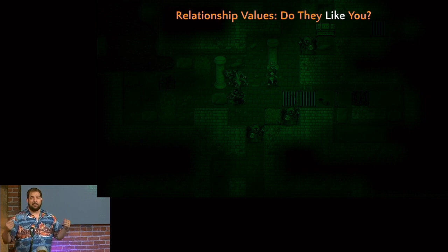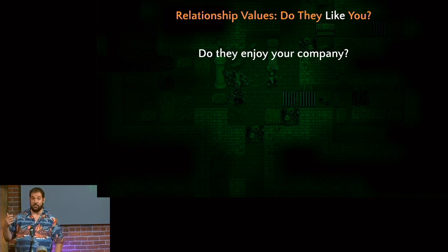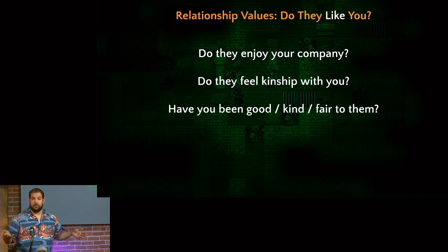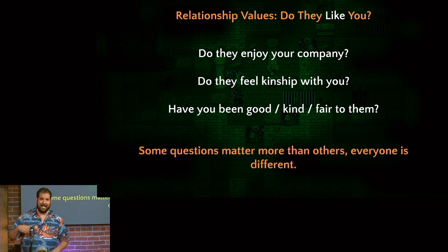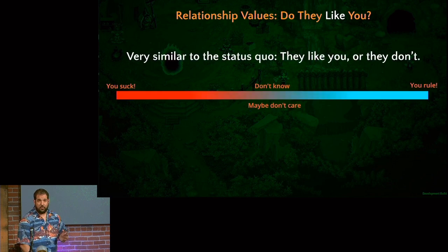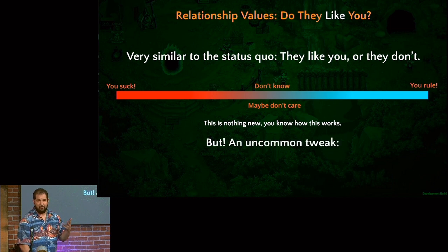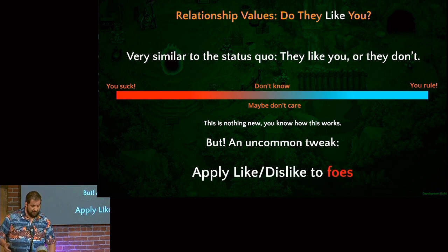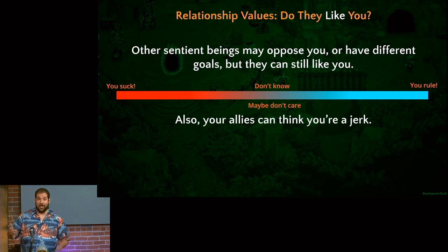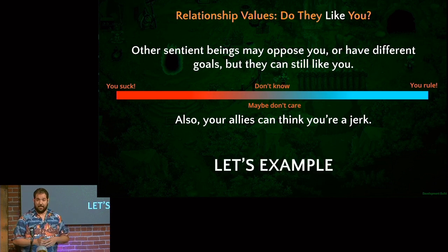I want to ask about relationships. The first part is: do they like you? Does the person enjoy your company? Do they feel a kinship with you? Do they think you've been good or kind or fair to them? Every NPC has different responses to these questions. This is a straight line — starts in the middle where they don't know you, can drop to bad (they don't like you) or go up to great. This is something a lot of games don't do enough — apply this to our foes. Just because somebody has an opposite goal doesn't mean they can't like you. Also, your allies can think you're a jerk.